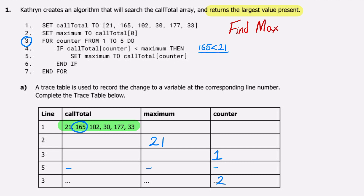In an SQA exam paper there would be a follow-up question asking you to explain why the algorithm is incorrect. We know we want to find the maximum value — 165 is greater than 21, so line five should be executed. The algorithm is incorrect because it does not find the maximum value; in fact it will find the minimum value. To correct this algorithm we have to change the comparison operator from less than to greater than, and the algorithm would then work correctly.